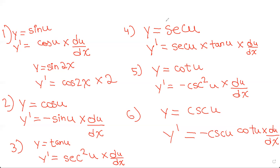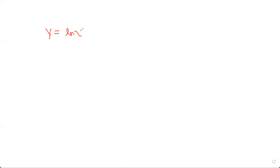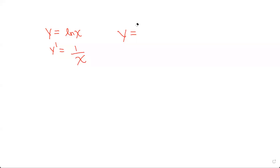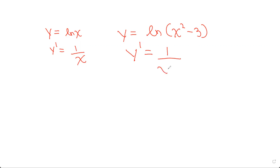Now I'm going to move on to derivatives of ln x and e to the power of x. When y equals ln x, y' equals 1/x. Let me give a slightly harder example: y equals ln(x² - 3), and we have to find y'. We apply chain rule: 1/(x² - 3), and we differentiate what's inside the bracket, which is 2x. So y' = 2x/(x² - 3).